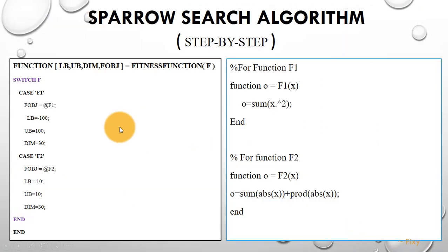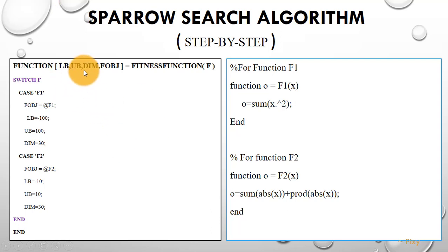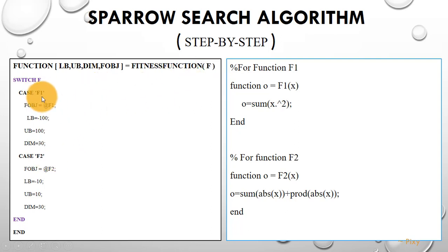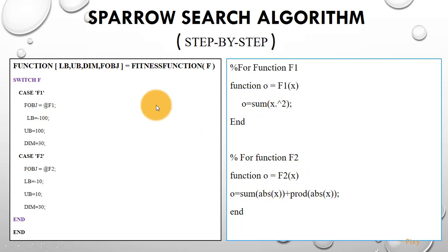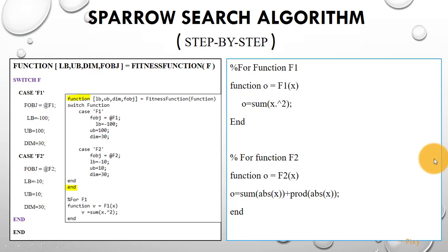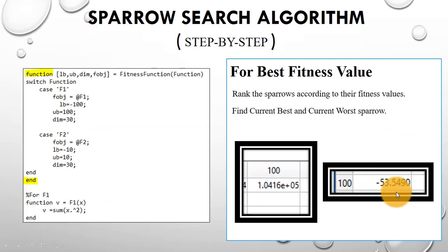In a separate file, just create a function. Inside this function you can see we have all the important arguments: lower bound, upper bound, and dimension. Here we are using a switch statement where we can switch to whichever function we want to use — either f1, f2, f3, and so on. You can see here this one is for function f1, and for f2 you write the code like this.